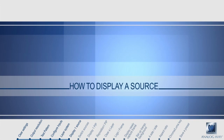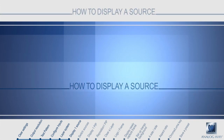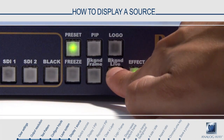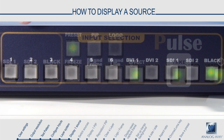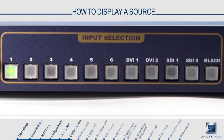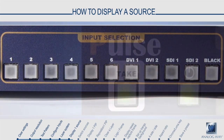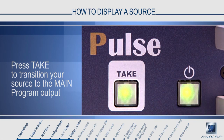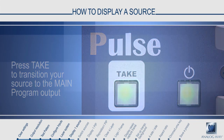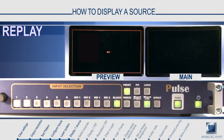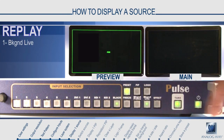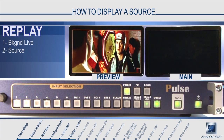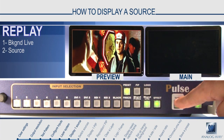How to display a source and select an input. First, select the layer you wish to adjust, such as background live. Then select the source and press take to transition your source to the main program screen. Let's see that again: press background live, press input 1, and your source will appear on the preview. Press take to cleanly transition it to main.